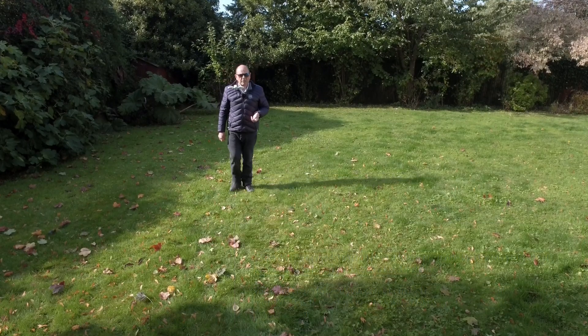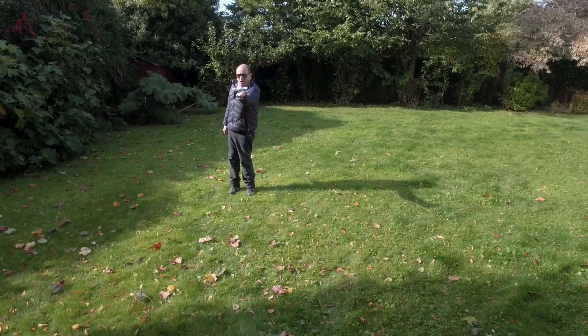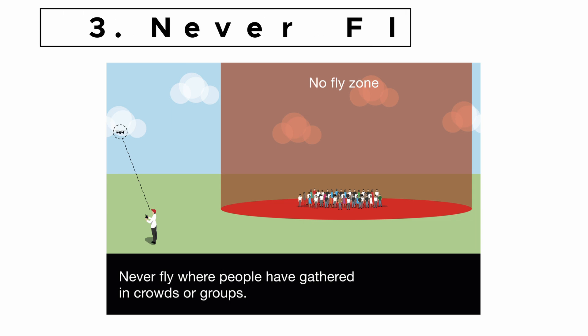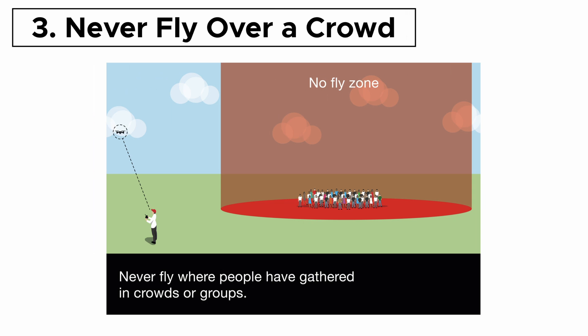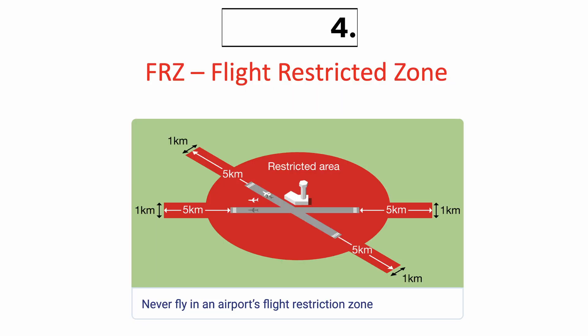If I walk forward the drone should land. Number three of the key CAA rules is: never ever fly over a crowd of people under any circumstances — never fly over a crowd.